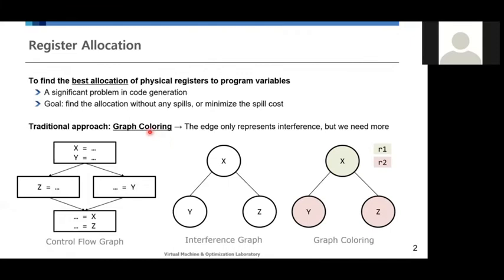Register allocation problem is to find the best allocation of physical registers to program variables. It has been a significant problem in code generation due to its impact on the code quality. We shouldn't allocate the same registers to interfering variables while minimizing the spill costs.